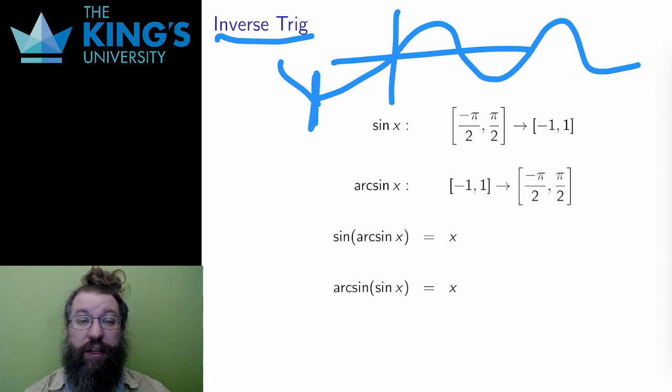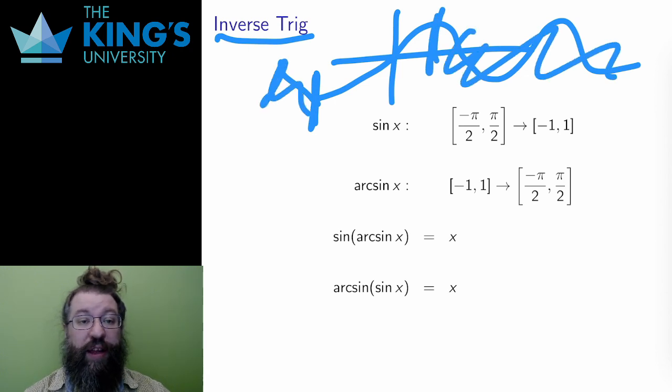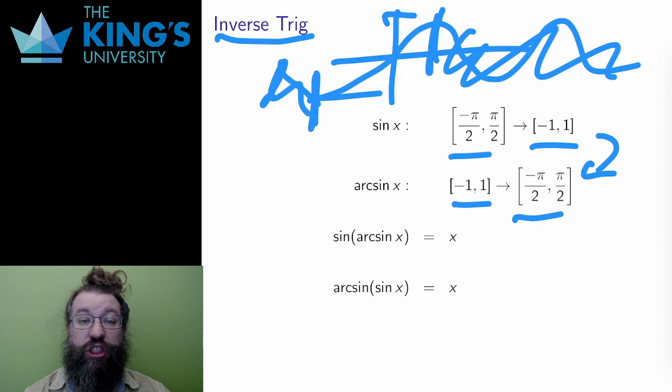For sine, the domain is negative pi over 2 to pi over 2. The output of sine on that domain is negative 1 to 1. Then the inverse reverses the domain and range, a function with inputs from negative 1 to 1 and outputs from negative pi over 2 to pi over 2.